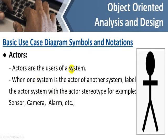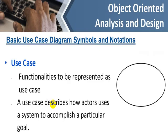The next symbol is the actor. Actors are the users of a system. When one system is the actor of another system, label the actor with the actor stereotype — for example, sensor, camera, or alarm. That means it is not always a human interacting with the system; there can be devices or hardware. We connect those use cases with labels like sensor, camera, or alarm. So the actor is not only a human user.